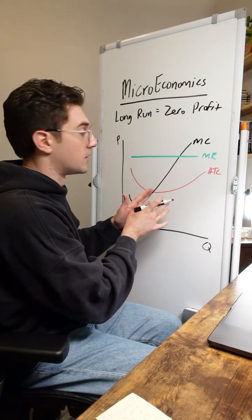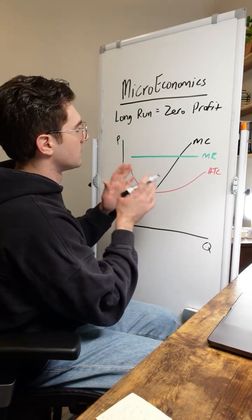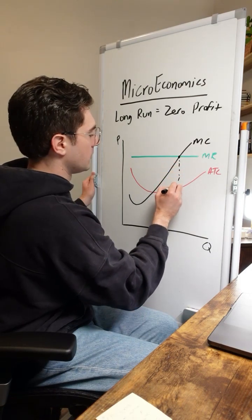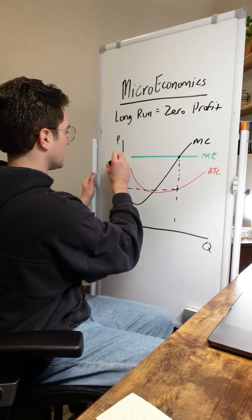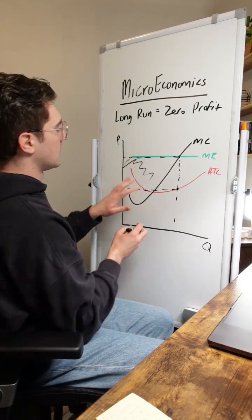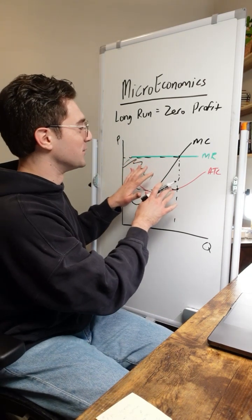This perfectly competitive firm right here is generating profit. And the reason is because at this MR equals MC point, when I go down, I can see that it's above the ATC. So we're generating like this rectangle of profit right here. I don't want to cover everything up because I'm going to reuse these lines.